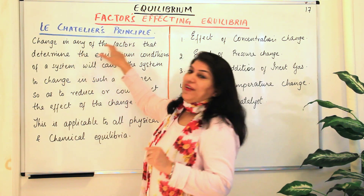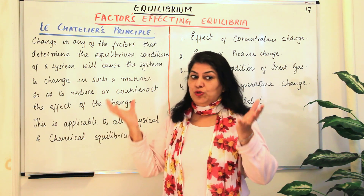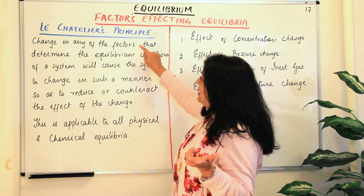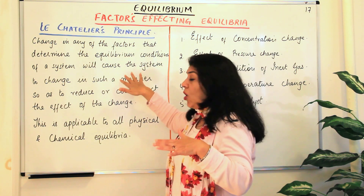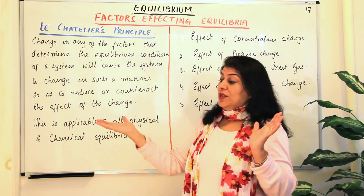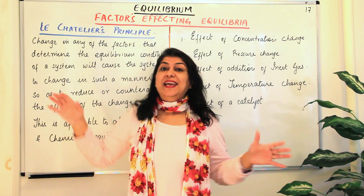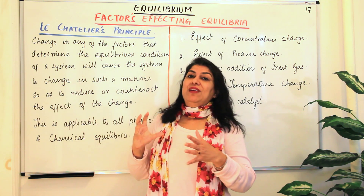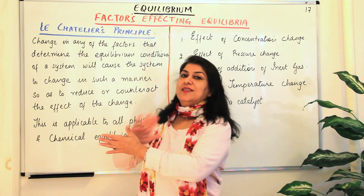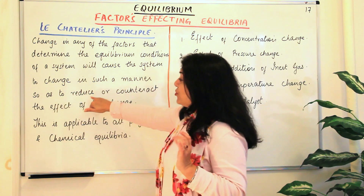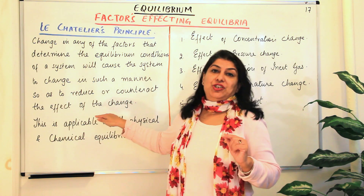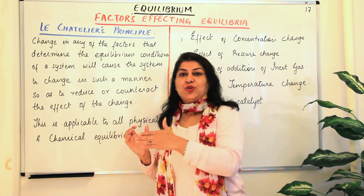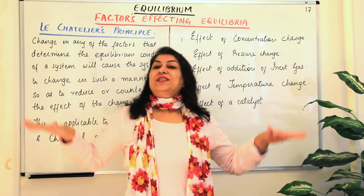Let me repeat this. Change of any of the factors — what are the factors that affect equilibrium? If you change any of those factors, it will cause a change in the equilibrium. The equilibrium, when the change occurs, will try to maintain balance again. Whatever factor is affecting it, whatever change has taken place, the equilibrium will shift in that direction so that the effect of that change is reduced or totally eliminated, and the equilibrium will shift in such a way that it establishes a new equilibrium and is stable again.